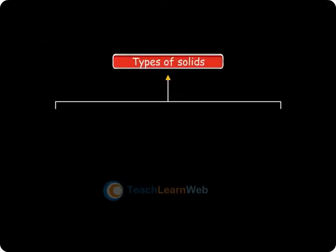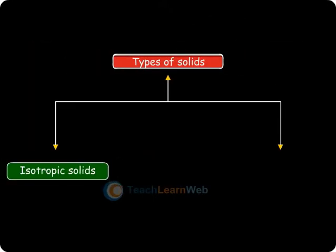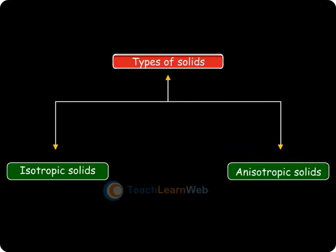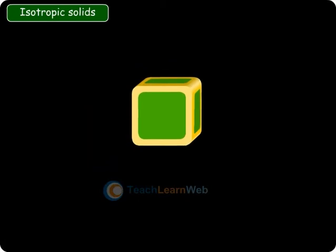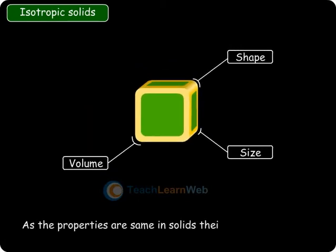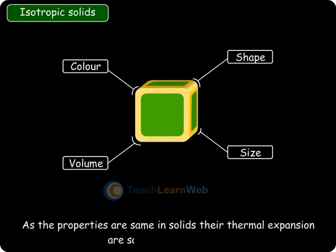Solids are of two types: isotropic solids and anisotropic solids. Isotropic solids are the solids whose properties are the same in all directions, and their thermal expansion is the same in all directions.